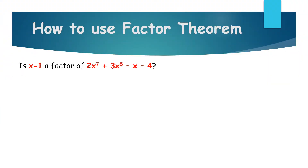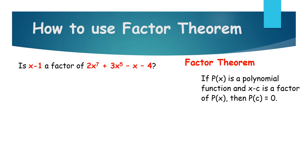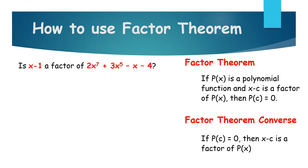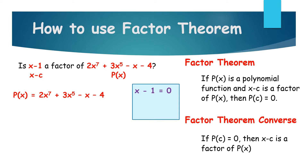So how to use the Factor Theorem? Let's use our question: is x minus 1 a factor of 2x raised to 7 plus 3x raised to 5 minus x minus 4? We identify p of x and x minus c. So p of x is equal to 2x raised to 7 plus 3x raised to 5 minus x minus 4. We obtain c by equating our divisor to 0 and solving for x, giving us x equals 1, therefore c equals 1.